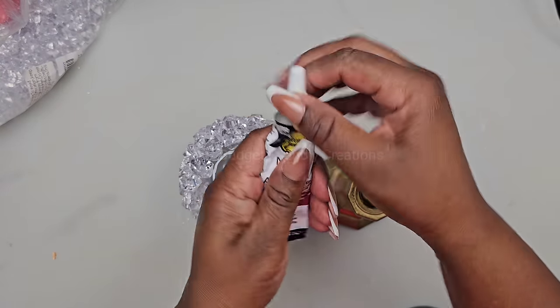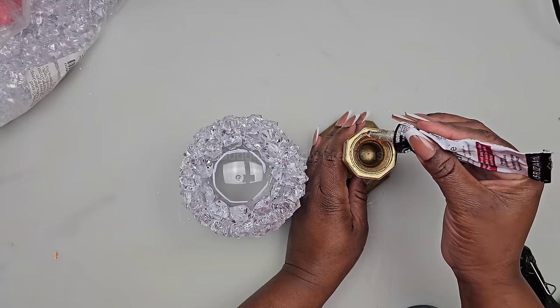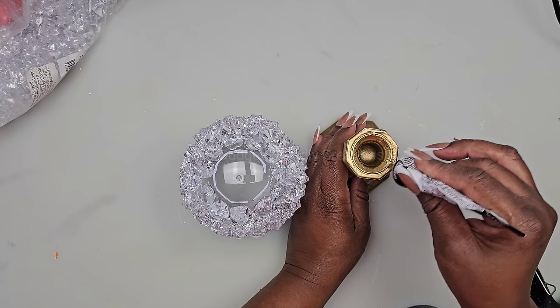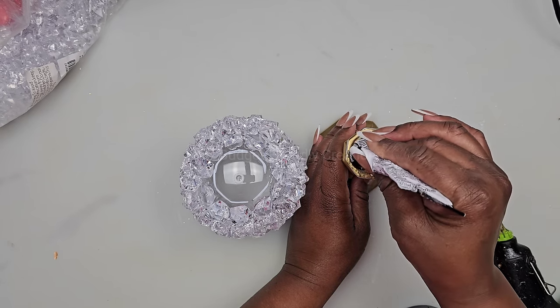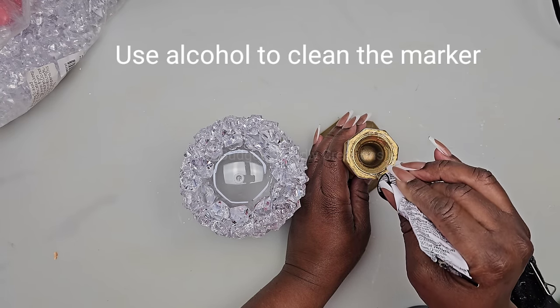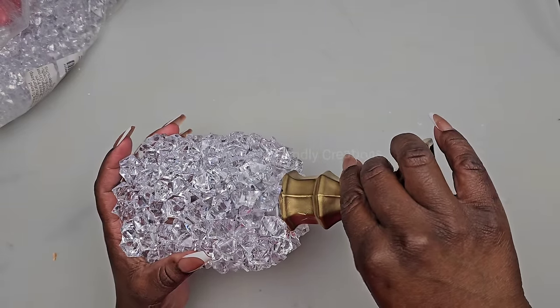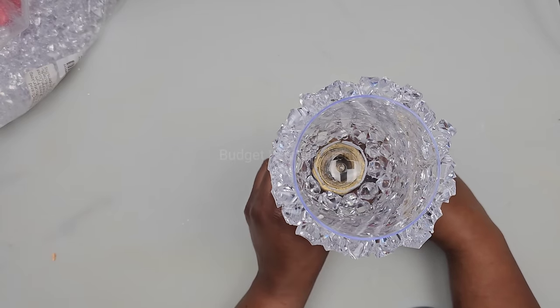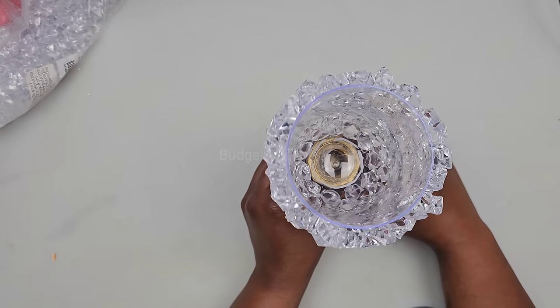For my strong adhesive, I'm using Aleen's mixed media adhesive. I'm placing my adhesive on the candle holder, then I'll place it right in that area that I marked. Just place it on the counter, make sure that it's straight. So I made two of the domes, now I'll join both of them together.